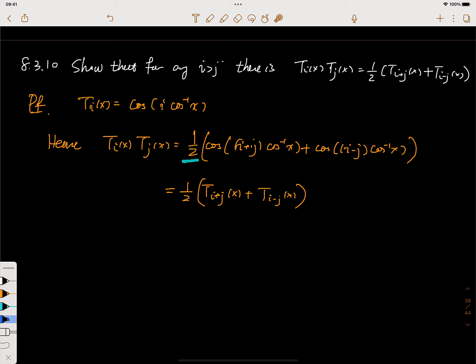Now remember, here this is just i plus j, essentially just telling us that this is the T_(i+j), and this is just the T_(i-j). That's why we just got this equation.